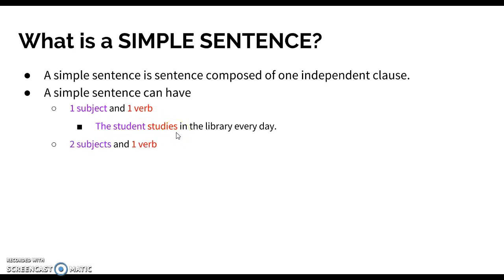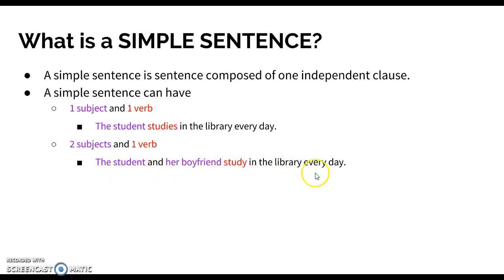We can have two subjects and one verb. For example: 'The student and her boyfriend study in the library every day.' We have two subjects — the student and her boyfriend — and study is the verb.